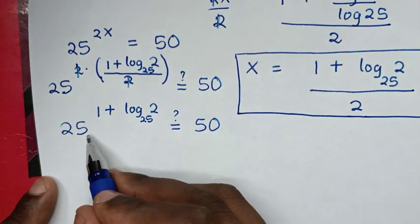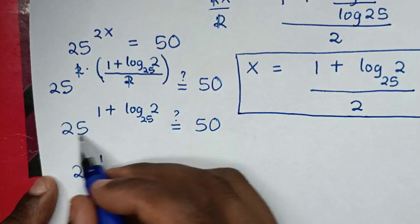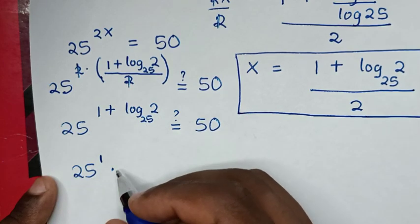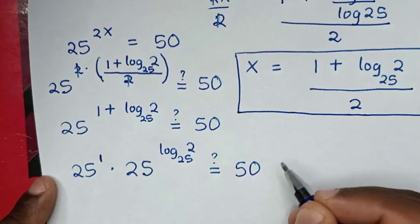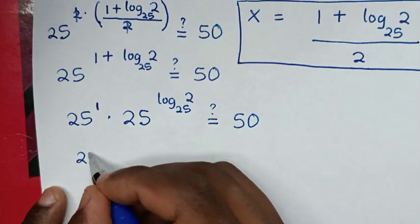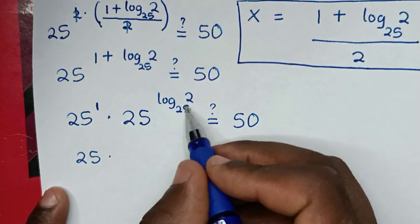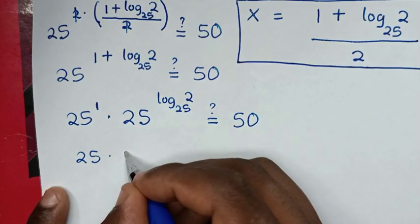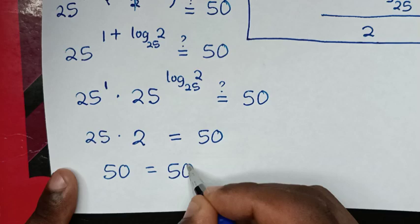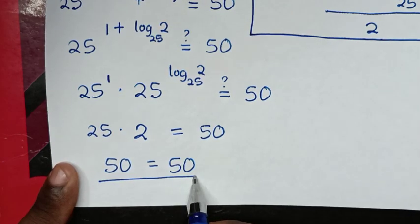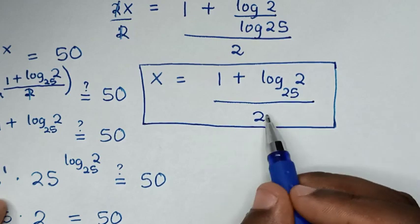Using exponent rules, 25 to the power of (1 plus log base 25 of 2) equals 25 to the power of 1, times 25 to the power of log base 25 of 2. From 25 to the power of 1 we get 25, and 25 to the power of log base 25 of 2 equals 2. So this gives 25 times 2 which is 50, equal to 50. Since the left side equals the right side, the value x equals (1 plus log base 25 of 2) over 2 is confirmed correct.